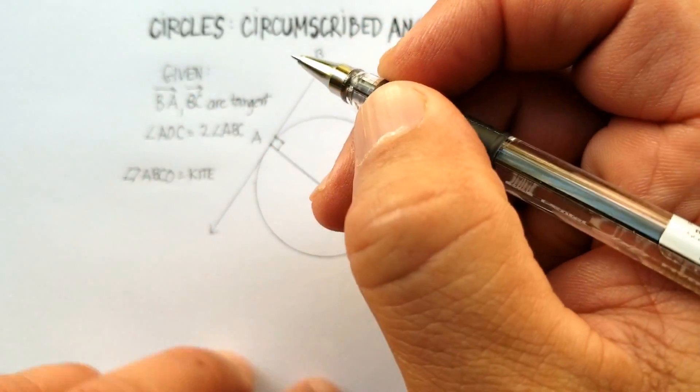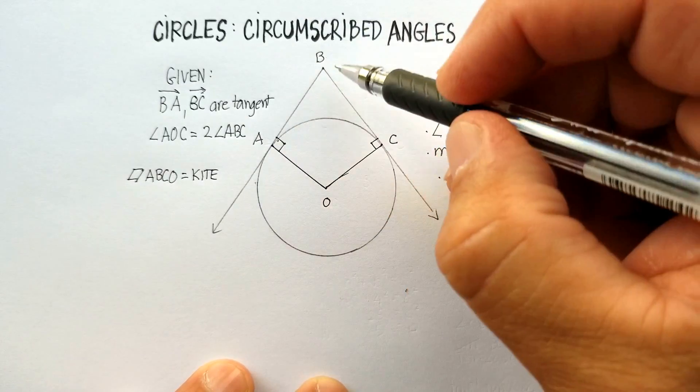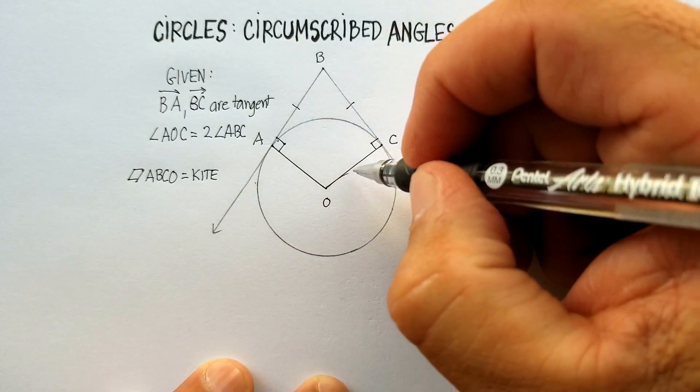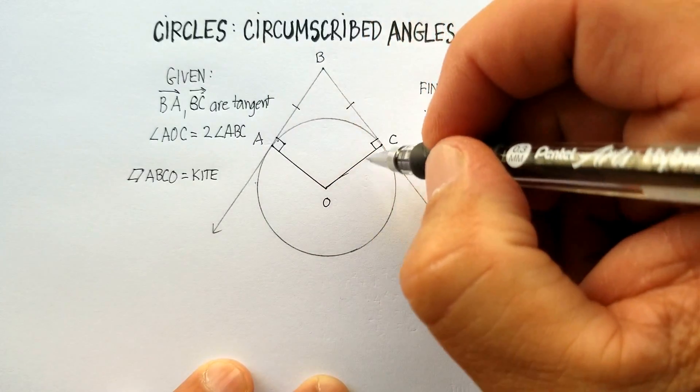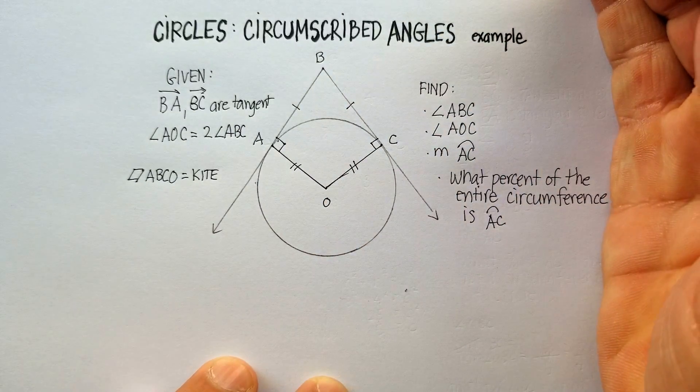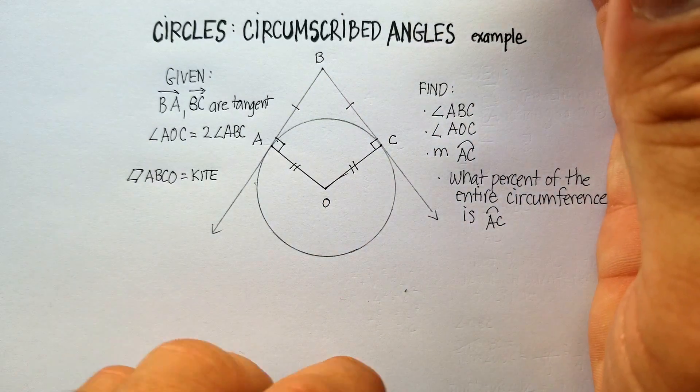And we know that ABCO is a kite. What do we know about kites? We know that there are two consecutive sides that are congruent. So, this side is congruent to this side, and then this following side is congruent to this side. Does that help us? A little bit, it might.